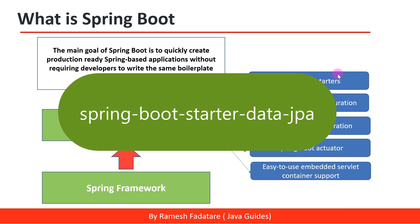Spring Boot starters take care of maintaining compatible versions and all the configurations. For example, the spring-boot-starter-data-jpa dependency — whenever we add this in our Spring Boot application, it will include all the dependencies required to use Spring Data JPA along with Hibernate library dependencies. Hibernate is one of the most commonly used JPA implementations, so Spring Data JPA internally uses Hibernate as a JPA provider.